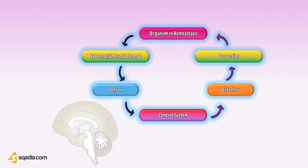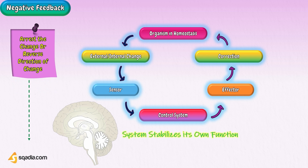Negative feedback is the one to which the system reacts in such a way as to arrest the change or reverse the direction of change. After receiving a message, effectors send negative feedback signals back to the system. The system then stabilizes its own function and makes an attempt to maintain homeostasis. Note that the word 'negative' here is not bad — this type of feedback mechanism helps maintain homeostasis more effectively than positive feedback.